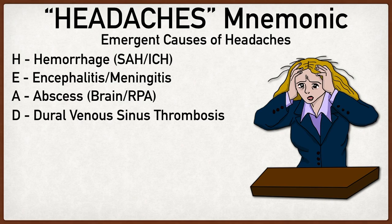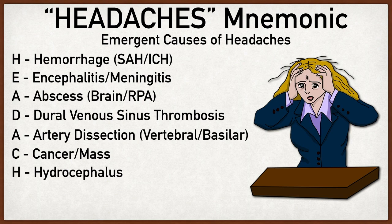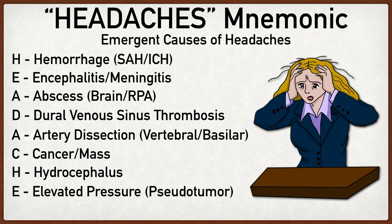D stands for dural venous sinus thrombosis. A is artery dissection — this could be a vertebral or basilar artery dissection, or you could even include carotid dissection in that. C stands for cancer or mass, which will help you remember those space-occupying lesions. H stands for hydrocephalus. E is elevated pressure, to help you remember pseudotumor cerebri. And S stands for stroke or seizures.